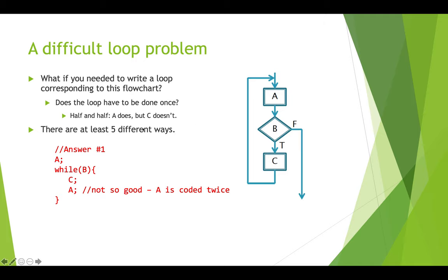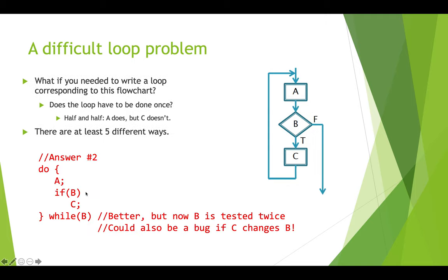The first way that we might do this is like this. We take the statements that are represented by block A and we execute those, and then we test condition B. If it's true, then we execute the statement C, we execute statement A, and then we will go back up to the top of the while loop and test condition B again. This will actually achieve what we're depicting here in this flowchart, but this is not a great way to do this because we're actually doing A twice.